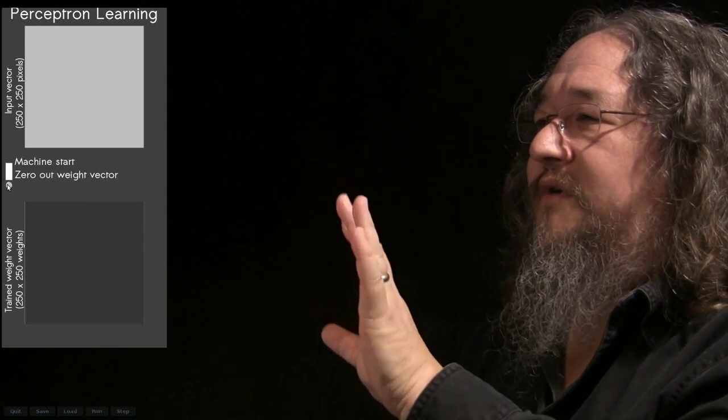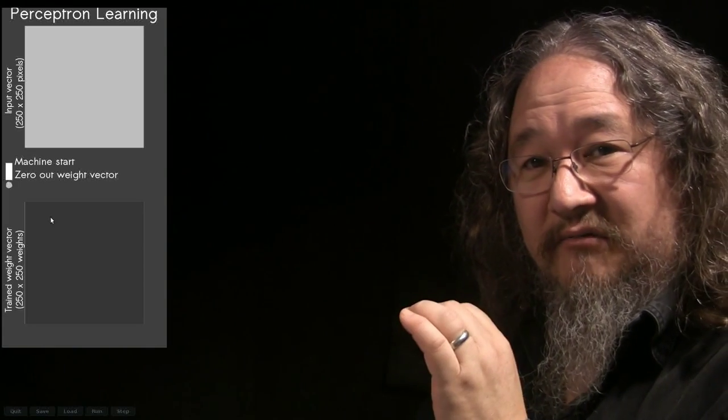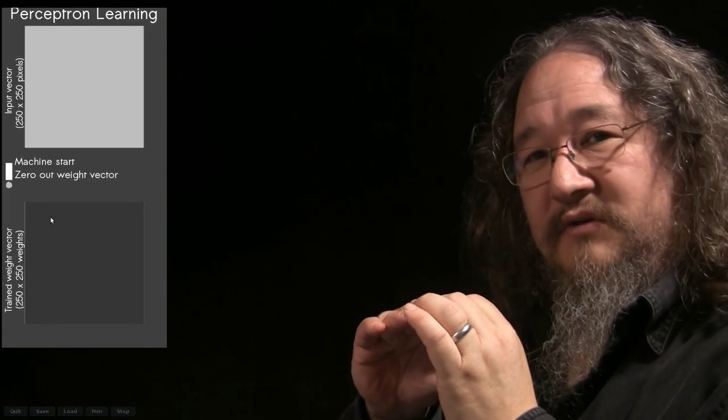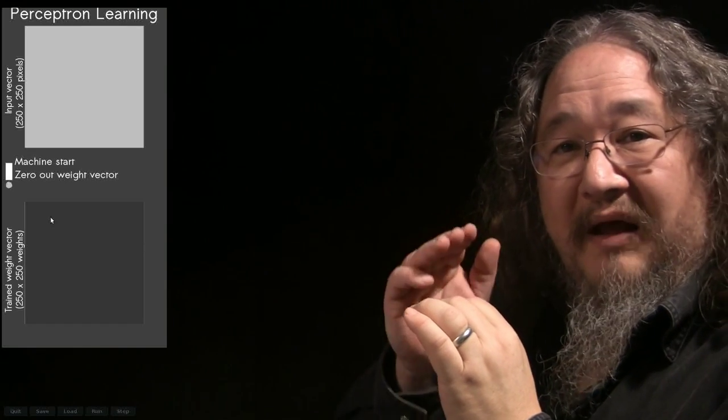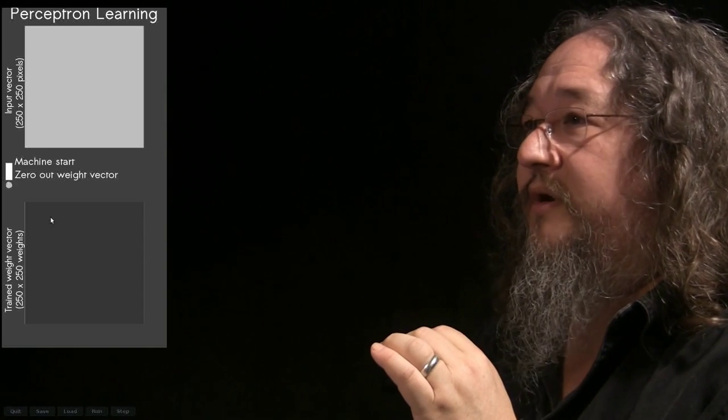The way it works is this. Up here we've got our input. This is 250 by 250 individual pixels that make up a black and white picture. So they can be zero, which is black, they can be one which is white, anywhere in between which is gray. Down here at the bottom we have another whole set of 250 by 250, 62,000 something weights, numbers that represent what we've learned.